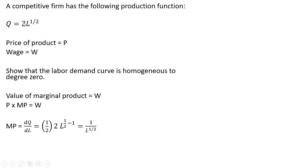And doing the math here, we bring down the 1 half on the exponent on L down in front. So 1 half times 2 will disappear. And then on this exponent here, 1 half, we subtract 1. And so we can just move that negative exponent into the denominator. So instead of writing L to the minus 1 half power, I'm just going to write 1 divided by L to the 1 half power.